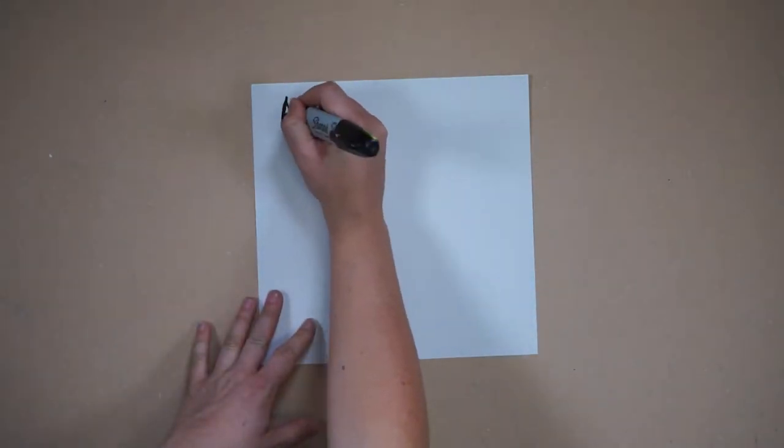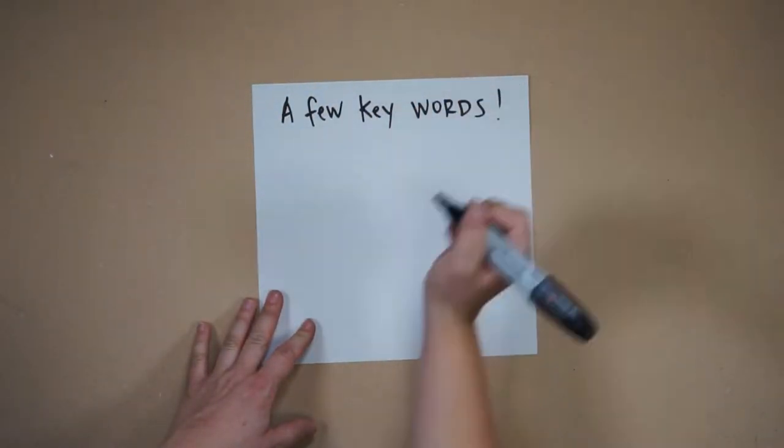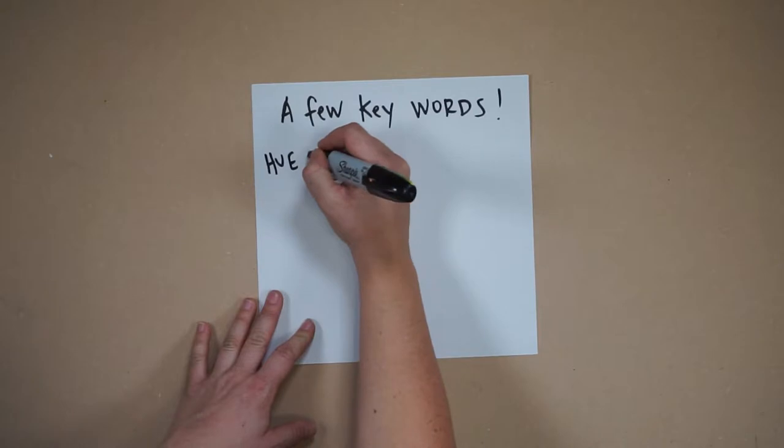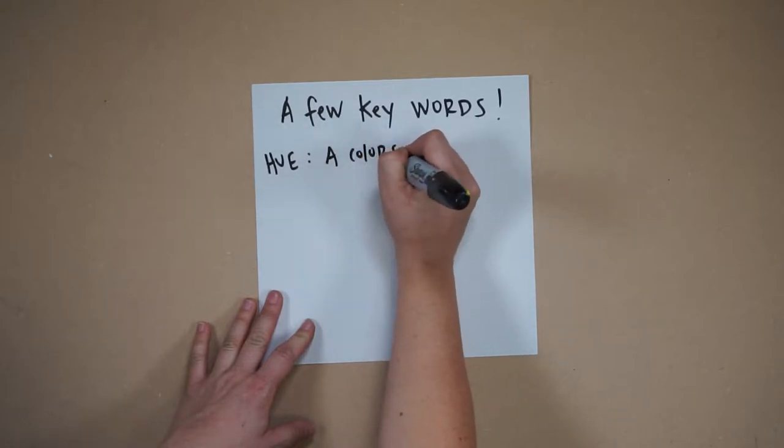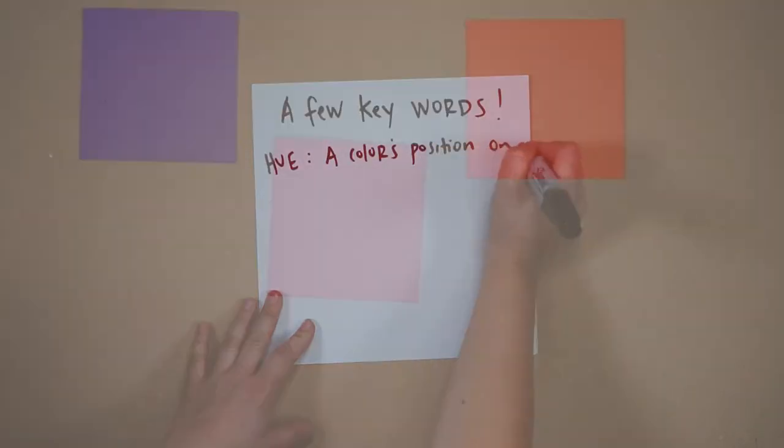Let's define a few key words. Hue is a color's position on the color wheel. For example, red is in between violet and orange.